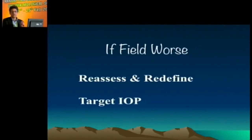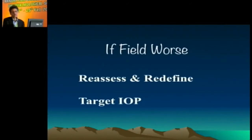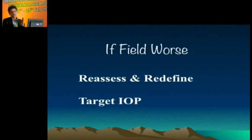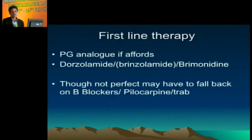After starting medication, do serial follow-up with fields every three to six months. Do a diurnal pressure check to confirm you have achieved the target pressure at all time points. If you have four to five readings coming in at around 12 to 14 — that is what you wanted. If not, increase or change the medication. If fields continue to worsen despite achieving your pressure target, that pressure was insufficient, so lower it further. The target pressure keeps evolving as you monitor fields.